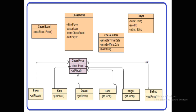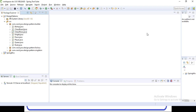With Builder design pattern, we will have a ChessBuilder inner class which has the extra parameters: getStartTime, getEndTime, and level. These three are the extra parameters we put into the inner class. ChessGame will have only the mandatory parameters which are white player, black player, chess board, and game start. Let's implement this using Eclipse.